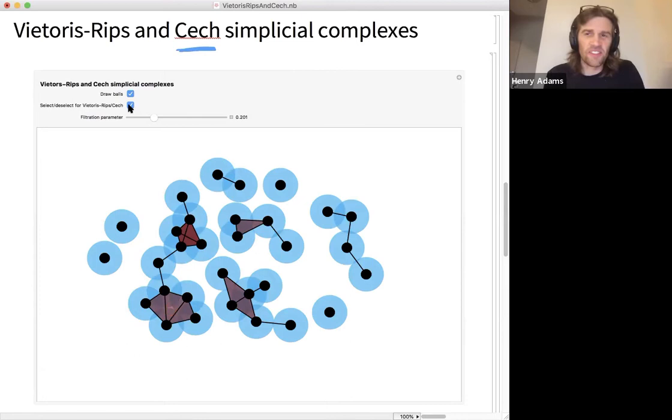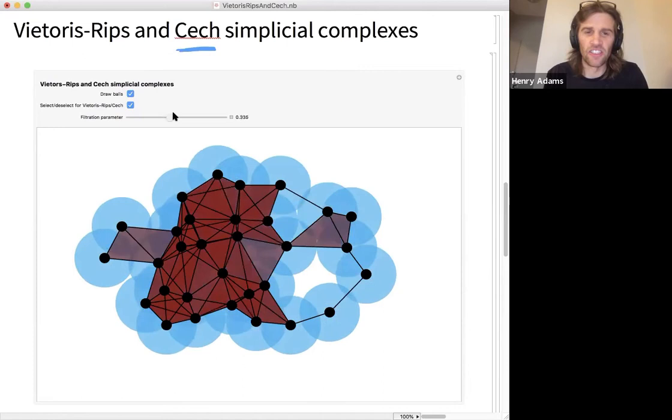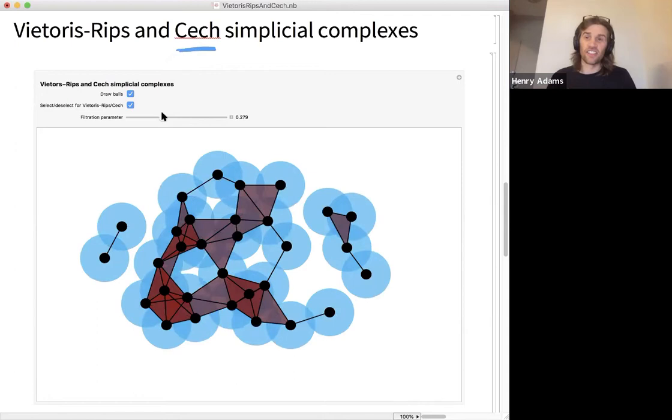So there's some subtle differences between Čech and Vietoris-Rips, but you should think of them as trying to accomplish the same task, measuring the shape of a data set as a scale increases. The Čech complex is theoretically nicer because it's the same shape as the union of the balls, but it's harder to compute. The Vietoris-Rips complex is how people compute in practice, but it approximates the Čech complex in a nice way.